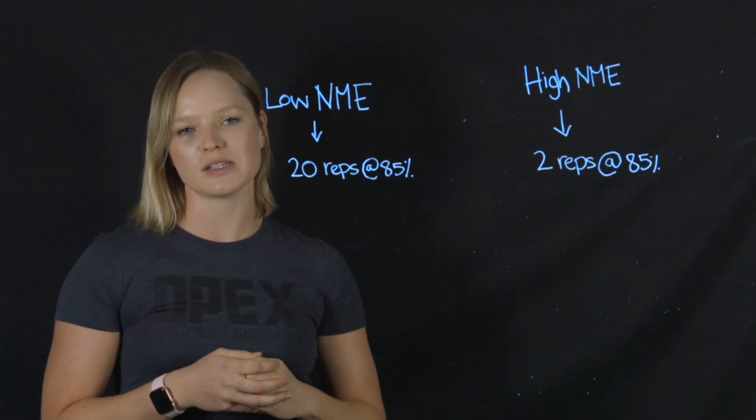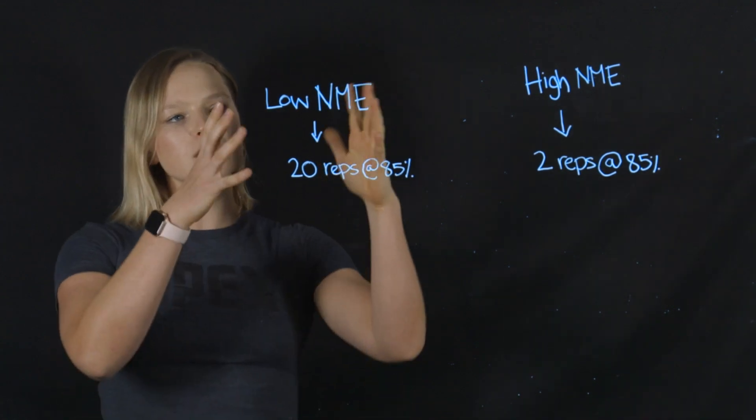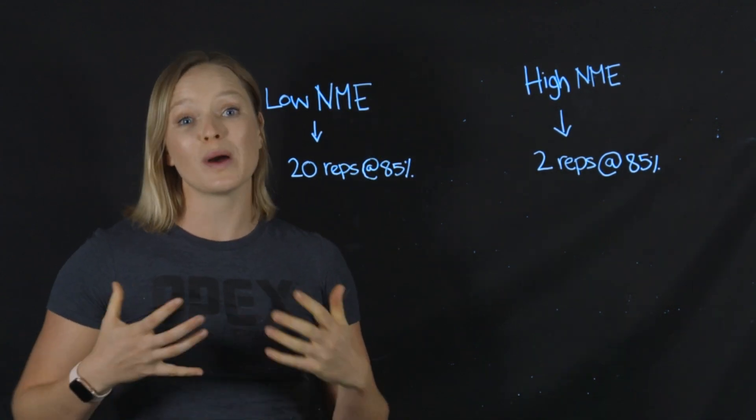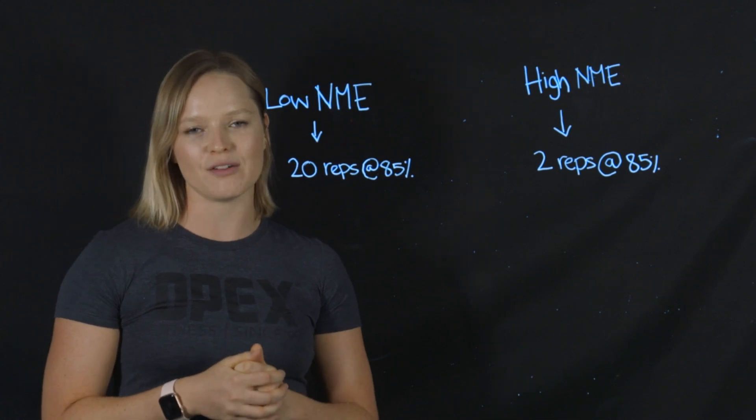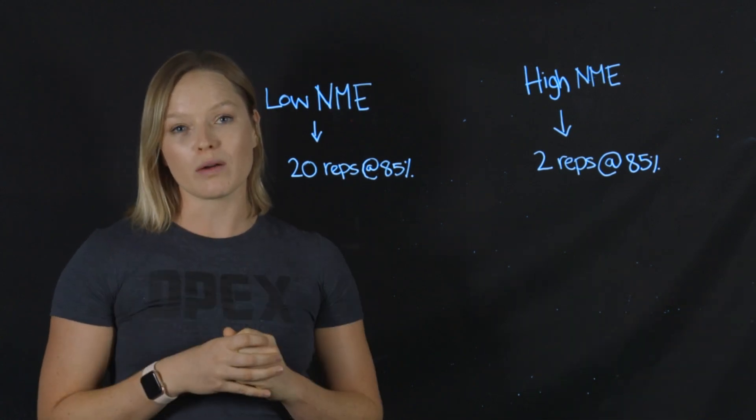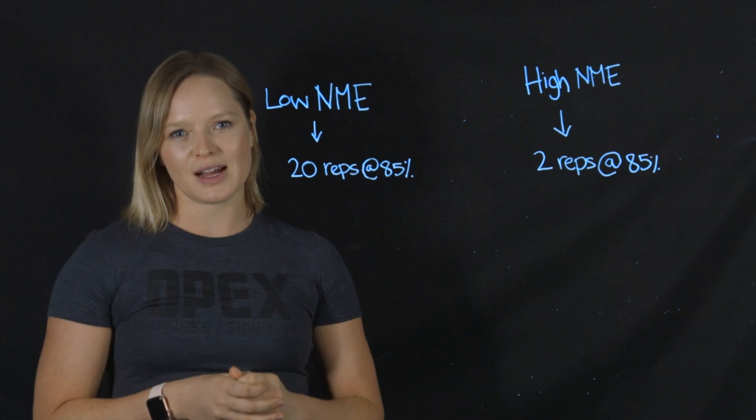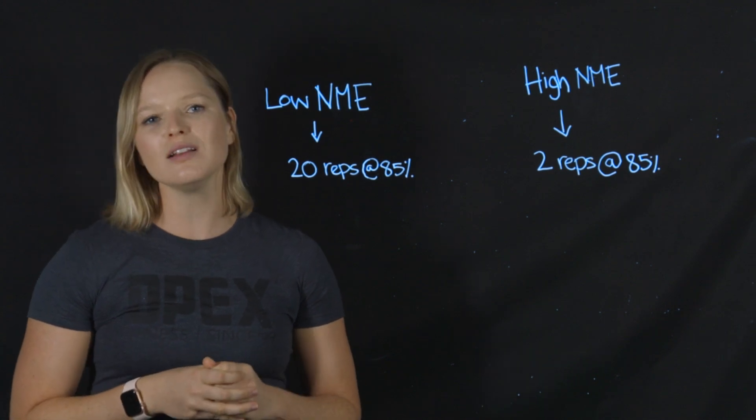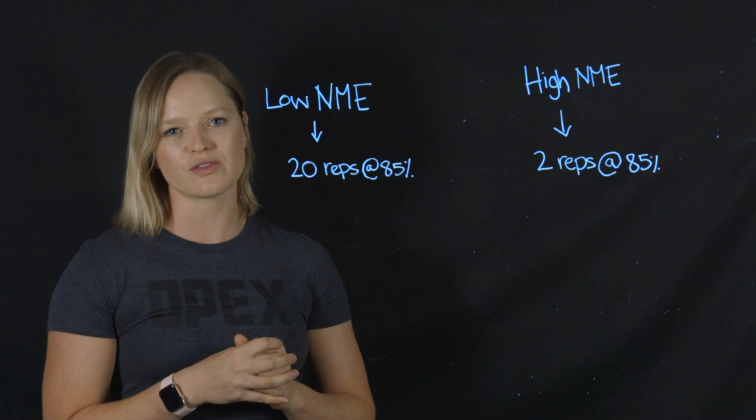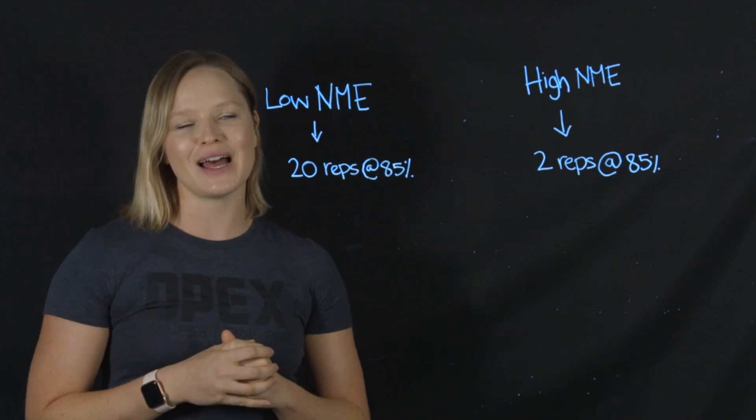On the low end, let's say this client was able to perform 20 repetitions at 85% of their one rep max. When we go to design their program, if we're looking to give them a strength endurance dose response from their training and we give them three sets of three reps at 85%, they're going to get very little from that.